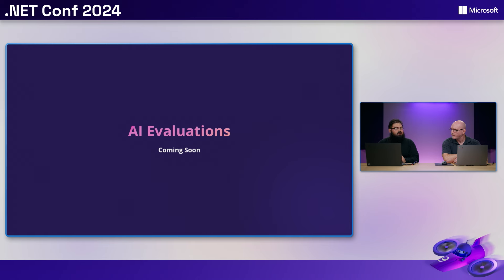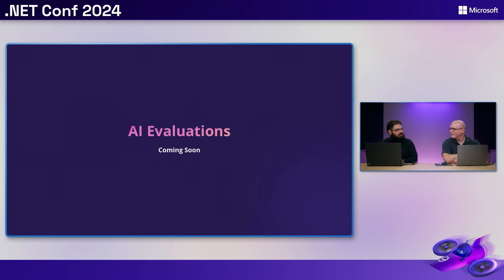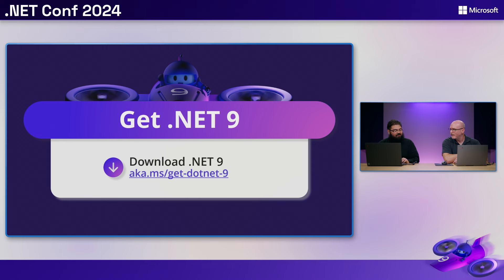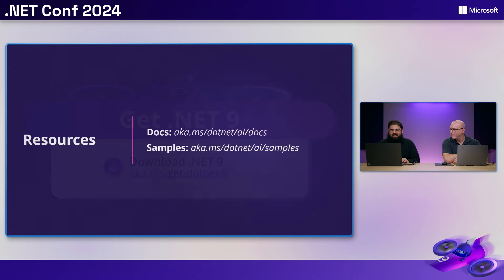AI evaluations are coming soon to the .NET ecosystem — stay tuned, in the next few days you'll hear more about this. We gave you a sneak peek today. That concludes our talk — make sure to get .NET 9 and check out the list of resources in docs and samples so you can get started.